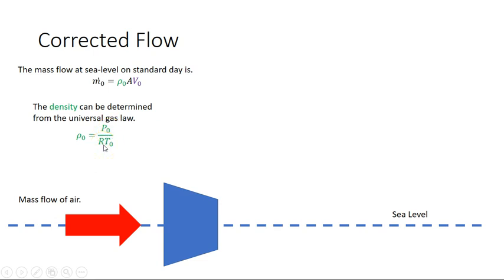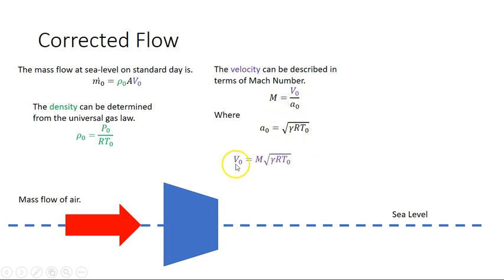The velocity can be expressed in terms of its Mach number, where Mach number is the velocity over the speed of sound at sea level, where the speed of sound is γRT₀, or the square root of γRT₀. So just rearranging this, we have an expression for the velocity. We're going to substitute these back into this equation.